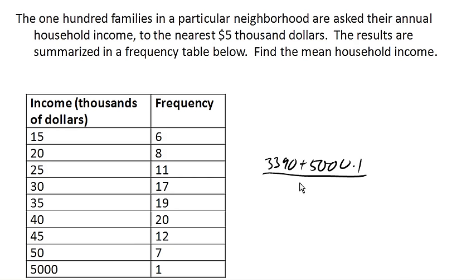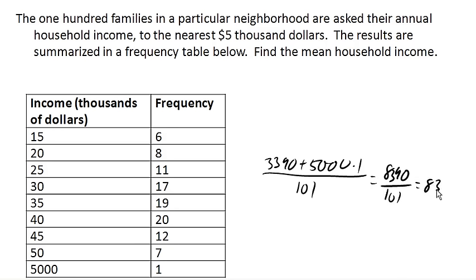So we end up with 8,390 divided by 101, which equals approximately 83.069. This suggests a mean in the range of 83.1 thousand dollars.